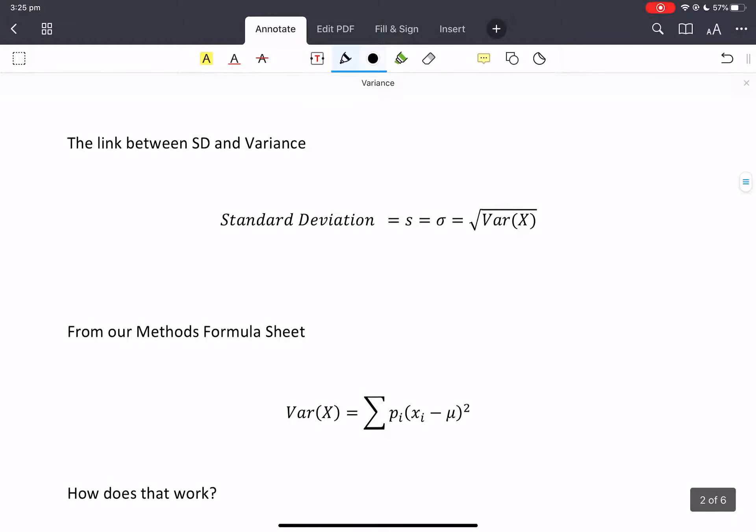Okay, there is a link between standard deviation and variance. So standard deviation is the square root of the variance. So if we know one we know the other. They're inextricably linked.